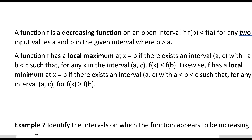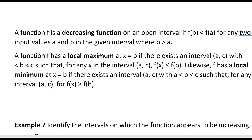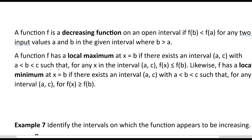F has a local maximum at x equals B if there is an interval (A, C) with A less than B less than C, such that for any x in the interval, F(x) is less than or equal to F(B) — so it's the high point within a range of values. Likewise, F has a local minimum at x equals B if there exists an interval (A, C) where B is strictly between A and C, such that for any x in the interval, F(x) is greater than or equal to F(B) — everything else is bigger than it.